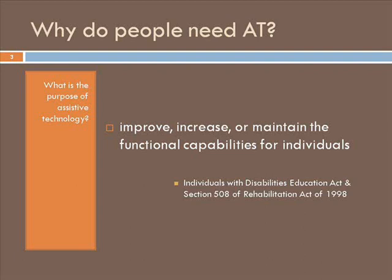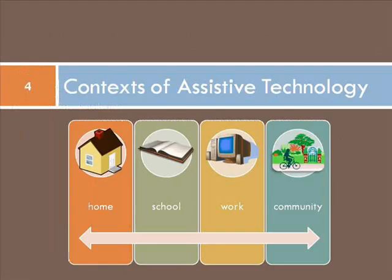In any case, it varies per individual, but Assistive Technology can be used in all areas of life. Every individual will use Assistive Technology in a different way and in different contexts, such as home, school, work, and within the community.